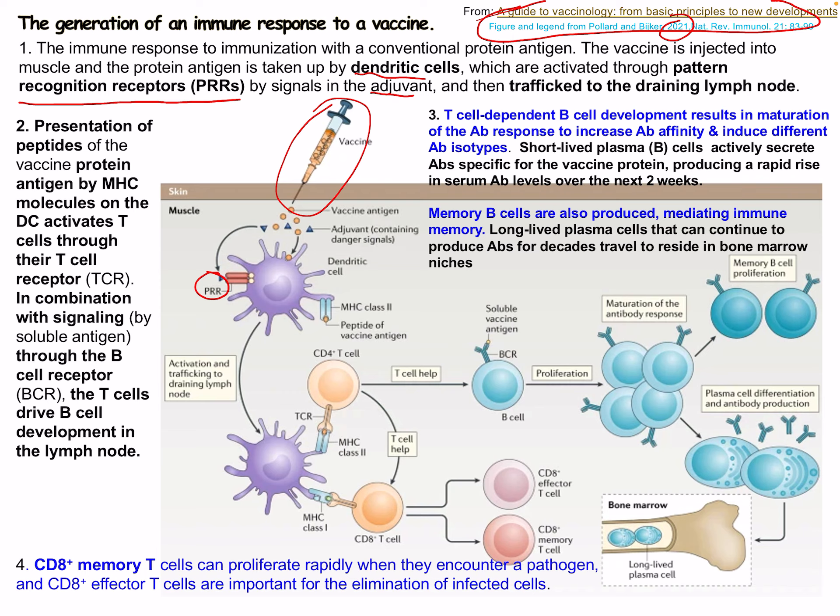The peptides of the vaccine protein antigen are presented by MHC molecules on the dendritic cells, activating T cells through their T cell receptor, in combination with signaling through the soluble antigen and through B cell receptors. The T cells drive B cell development in the lymph node. T cell-dependent B cell development results in maturation of the antibody response, increasing antibody amount and affinity, and inducing different antibody isotypes. Short-lived plasma B cells actively secrete antibodies, producing a rapid rise in serum antibody levels over the next two weeks.